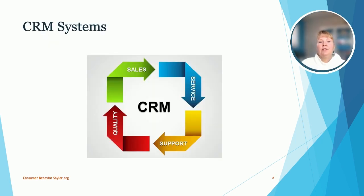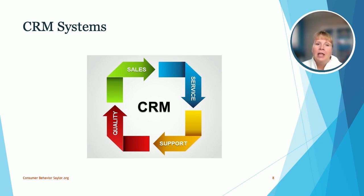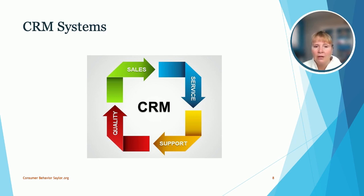This shows all of the different areas that might input information for any business — even schools and education systems have this. Each company will have a way to support the customer, and it might be through sales. They might record some basic information: names, phone numbers, sometimes addresses depending on shipping. Any sales interaction, any service, any follow-up — for example, if you're on Amazon and you're buying something, you might chat with somebody if you have a question about a product that arrived or maybe didn't arrive. Any service interactions would be recorded in that system as well.